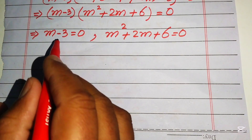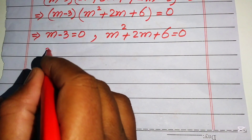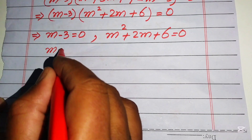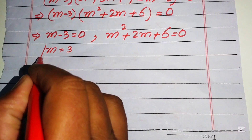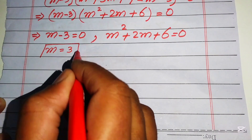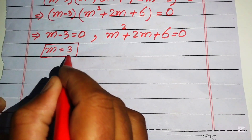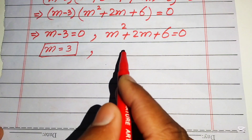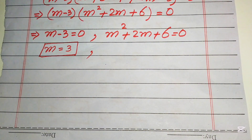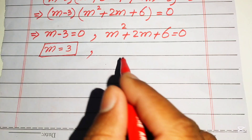In Case 1, moving minus 3 to the right-hand side gives us m equals 3. For Case 2, we have a quadratic equation which we solve using the quadratic formula.